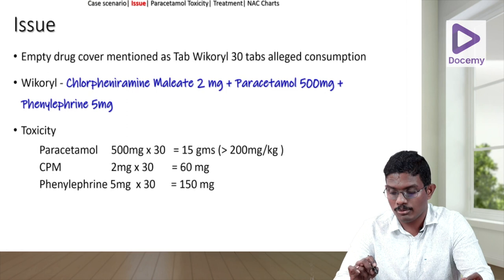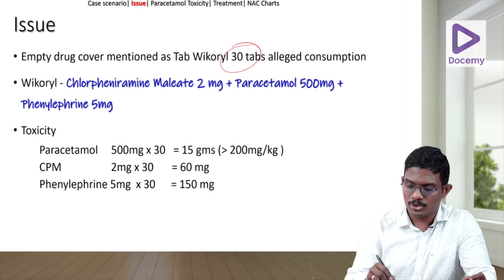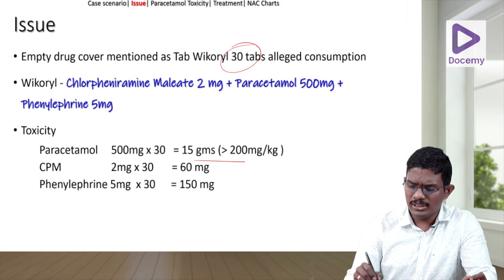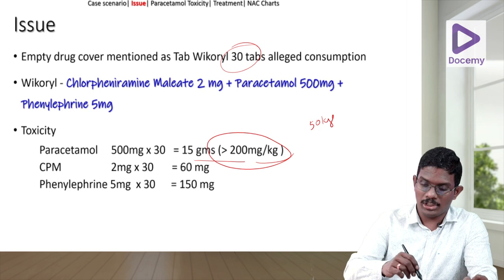The relatives brought the strips and we found the 30 tablets were a drug named Vikodal, which consists of chlorpheniramine 92mg plus paracetamol 500mg and phenylephrine 5mg. For 30 tablets, the total paracetamol was 500mg × 30 = 15 grams. For a person around 50kg, this exceeds 200mg/kg, meaning paracetamol has gone well beyond the level the body can metabolize, so paracetamol poisoning must be taken very seriously.